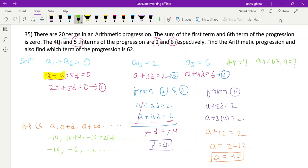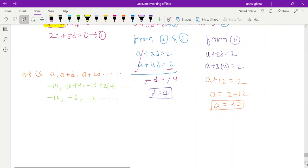Now find which term of the progression is 62. We'll write a_n equals a plus (n minus 1) times d. So 62 equals minus 10 plus (n minus 1) times 4.